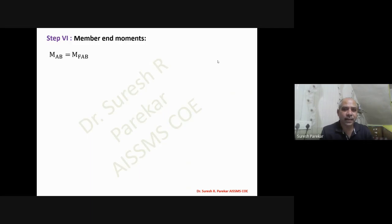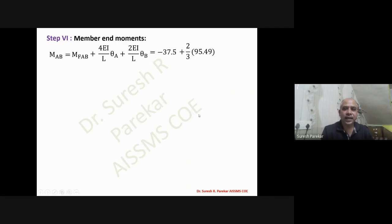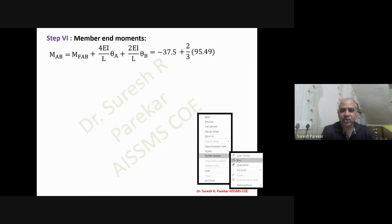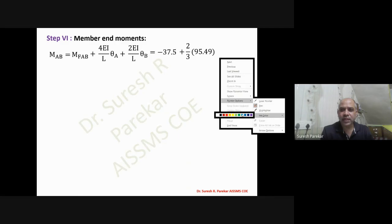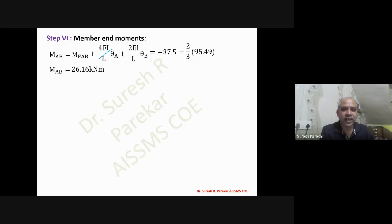For member AB: M_AB = MF_AB + (4EI/L)·θA + (2EI/L)·θB. Since θA = 0, the second term drops out. The final moment M_AB = 26.16 kN·m. Note: in slope deflection it was written as minus 26.16 kN·m — the correction gives plus 26.16 kN·m here.